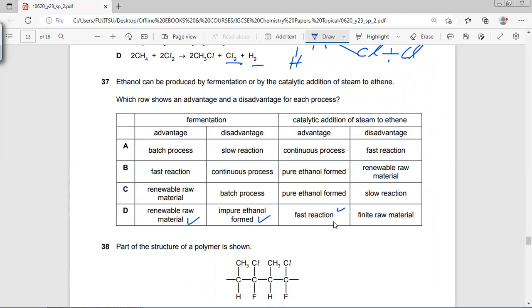And catalytic addition of steam is a fast reaction that is used to meet the demand of the industry for ethanol. But we use obviously petroleum products, so petroleum is a finite raw material, fossil fuel. So that's the problem with getting the reactant. So D.